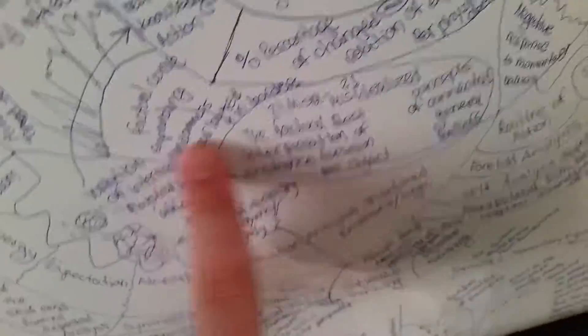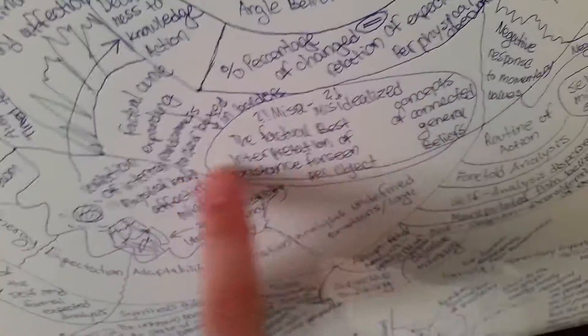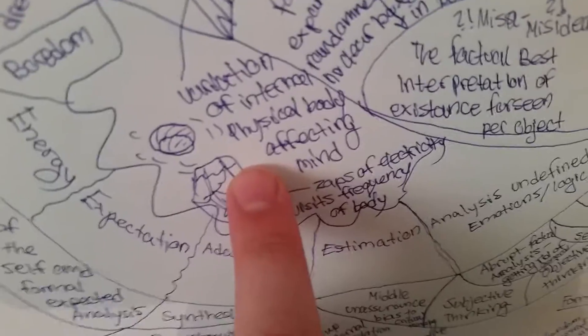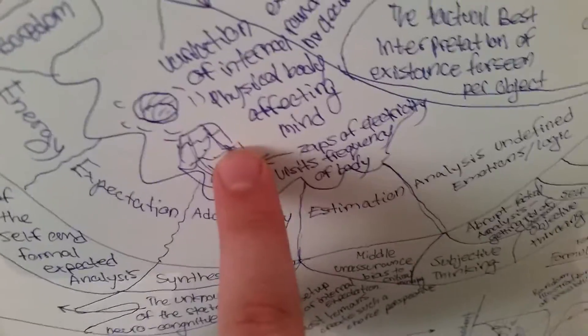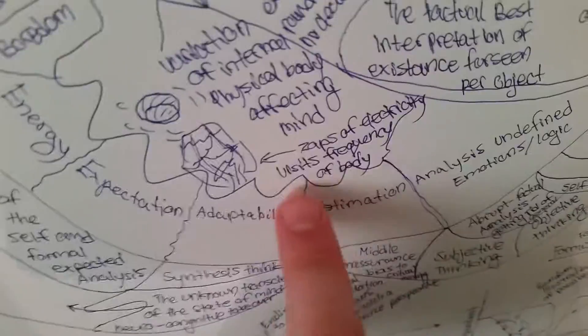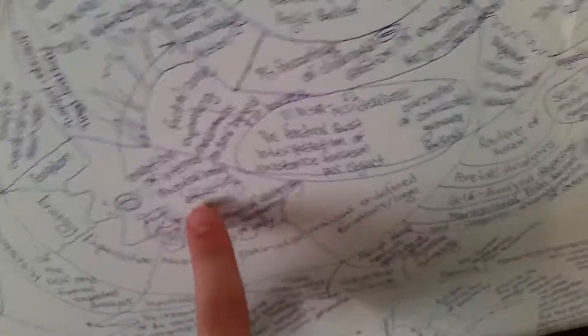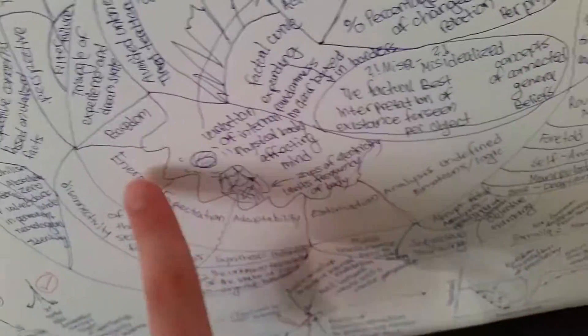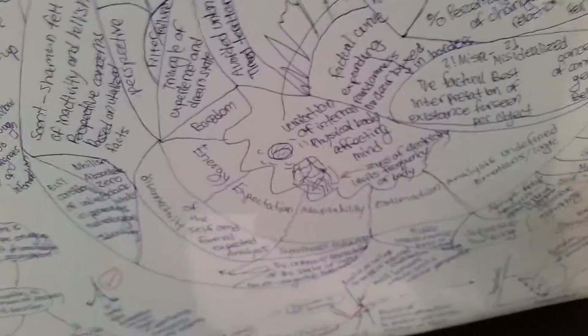Which you could choose which one fits you more on the scale and go down there. So variation of internal physical body affecting mind, zaps of electricity visits, frequency of the body. That's how you get to that state of mind by being synthetic. So you're letting yourself go, you're not defining your emotions. So now you broke up your feelings into one, two, three, four, five, six different types of parts. So you disassociated your harmony of your body together.